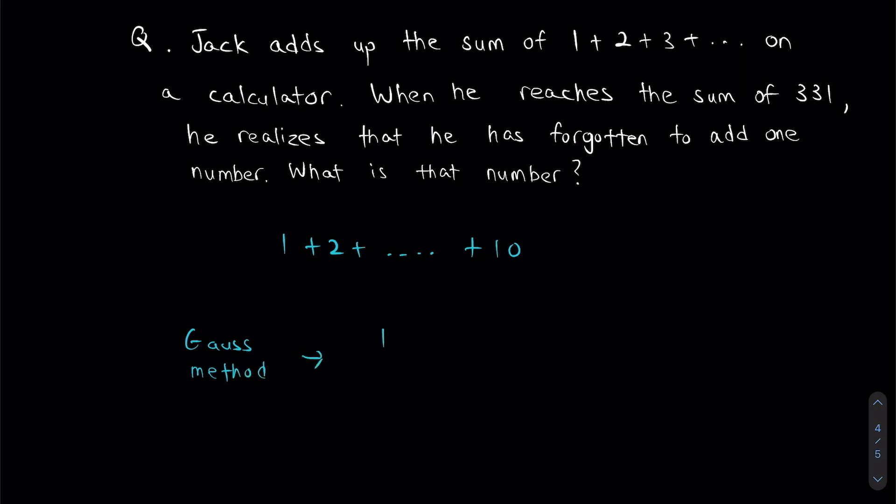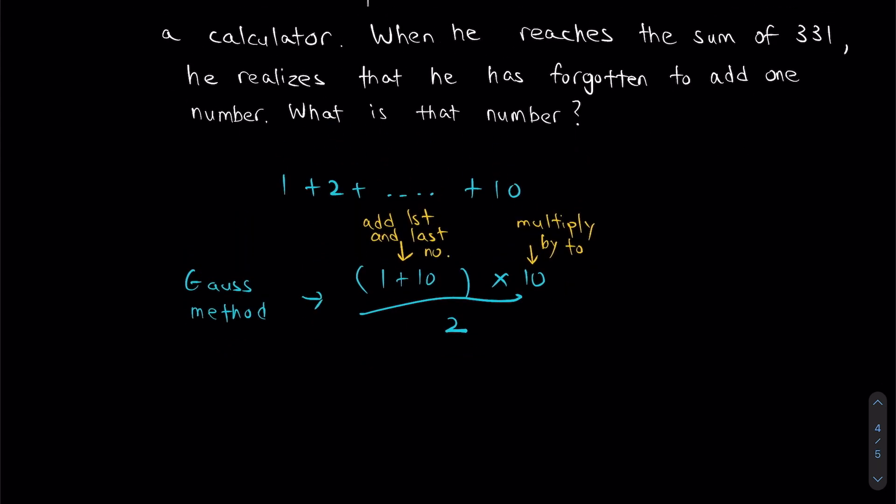First of all, you add the first and last number together and you put them in a bracket like this. Following that, you multiply by the total number of numbers. So in this case, 1 to 10, how many numbers do I have? I have 10 numbers, so I multiply that by 10. And once you have all of this, you divide it by 2. So just for your convenience, I'm going to label this. This is add first and last number. This right here is multiply by total numbers. And if you do some simple calculations, this right here should give you 55 as your answer.